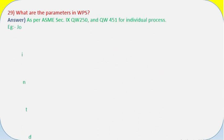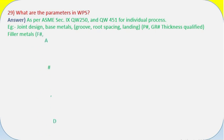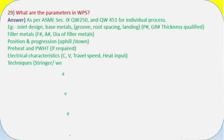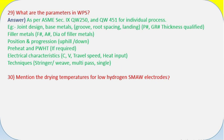Question 29: What are the parameters in WPS? Answer: As per ASME Section 9 QW-250 and QW-451 for individual process. For example: joint design, base metals (groove, root spacing, landing), P number, GR number, thickness qualified, filler metals (F sharp, A number, dia of filler metals), position and progression (uphill/down), preheat and PWHT if required, electrical characteristics (CV, travel speed, heat input), techniques (stinger/weave, multi-pass, single).